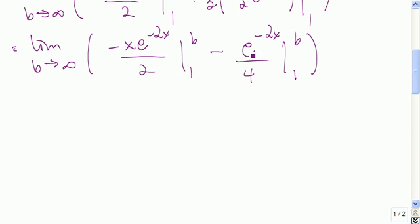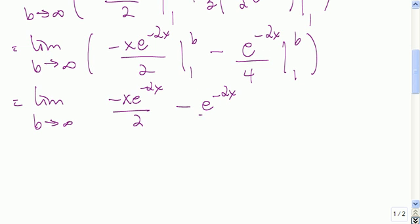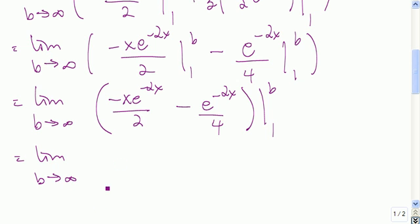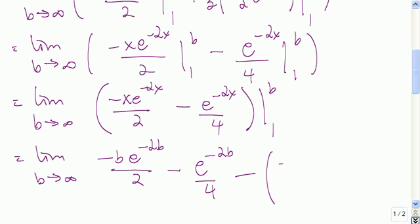Since both anti-derivatives are evaluated from 1 to b, we can write it as one single compact expression. So we have this function minus this function from 1 to b. Now we plug in b and subtract the answer when we plug in 1. That gives us negative b e to the negative 2b over 2 minus e to the negative 2b over 4, all minus the quantity negative 1 times e to the negative 2 divided by 2, minus e to the negative 2 divided by 4.